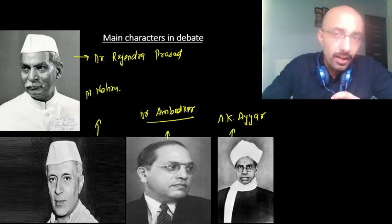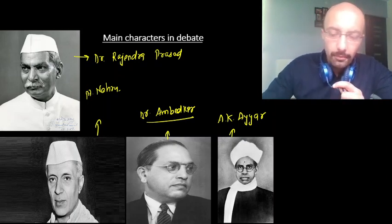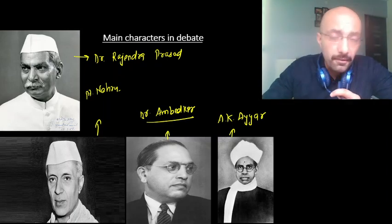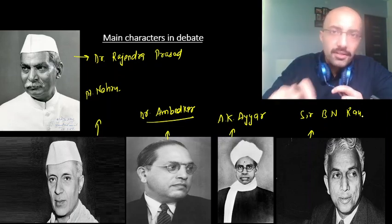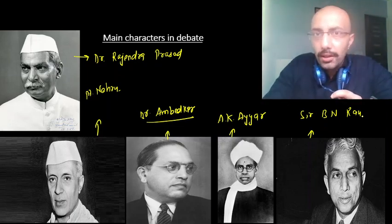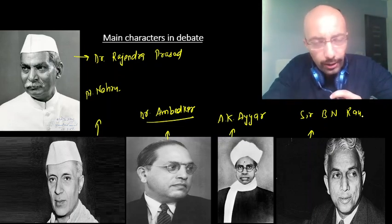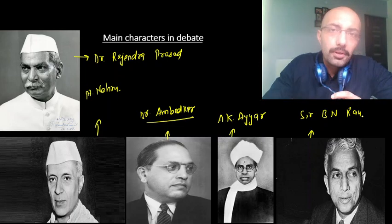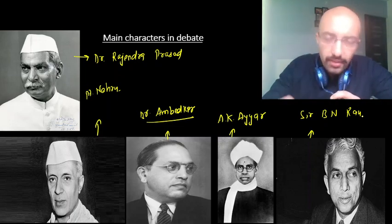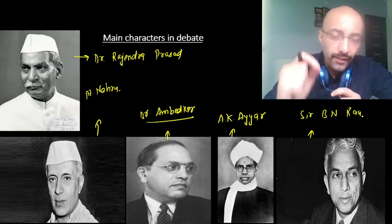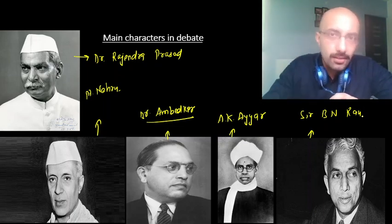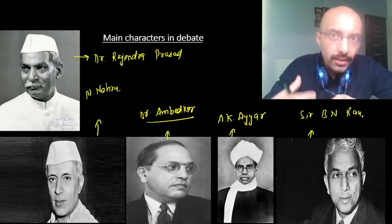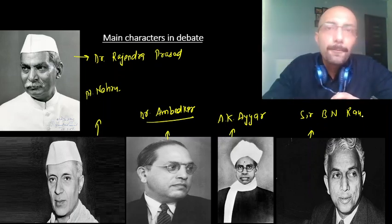Dr. B.R. Ambedkar himself once recognized that in drafting the Indian Constitution there was influence of much greater personalities, and one of those was A.K. Iyer. The last character in this debate is Sir B.N. Rao, who joined the Indian Civil Services in 1910, was knighted in 1938, and later became the Constitutional Advisor while we were drafting our Constitution. His views, opinions, and advice also influenced the shaping of India's Constitution.